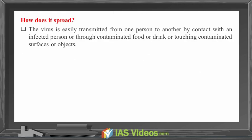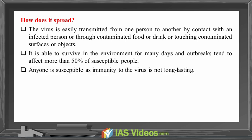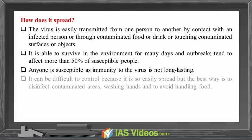The virus is easily transmitted from one person to another by contact with an infected person, or through contaminated food or drink, or by touching contaminated surfaces or objects. It is able to survive in the environment for many days, and outbreaks tend to affect more than 50% of susceptible people. Anyone is susceptible as immunity to the virus is not long-lasting. It can be difficult to control because it is so easily spread, but the best way is to disinfect contaminated areas, wash hands, and avoid handling food.